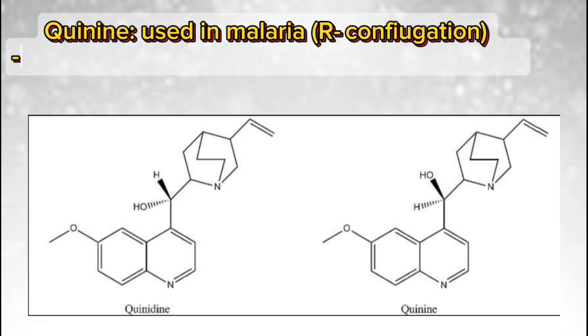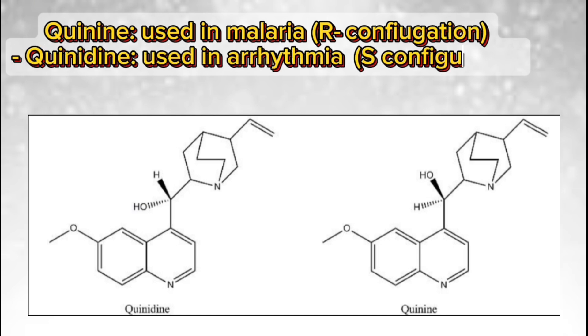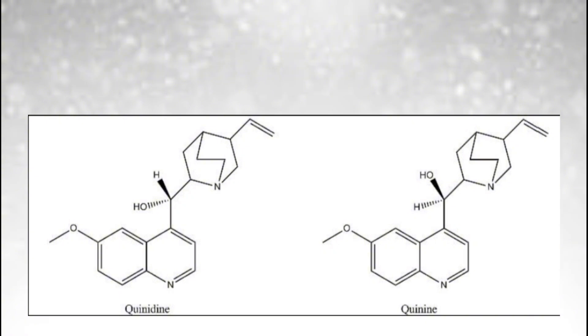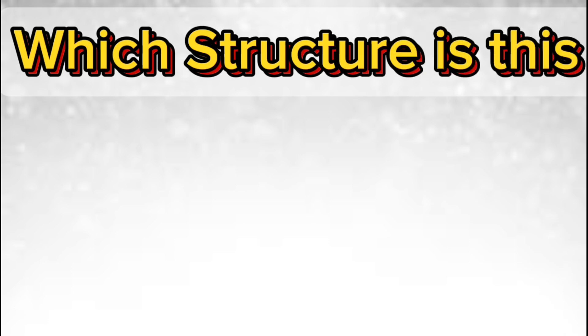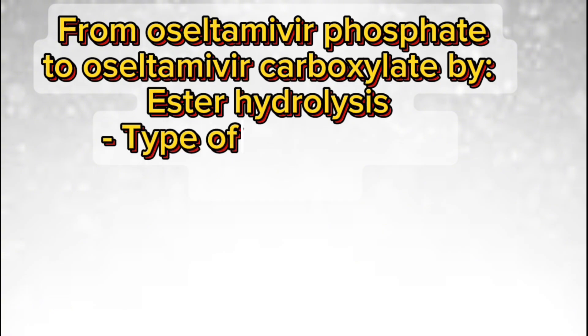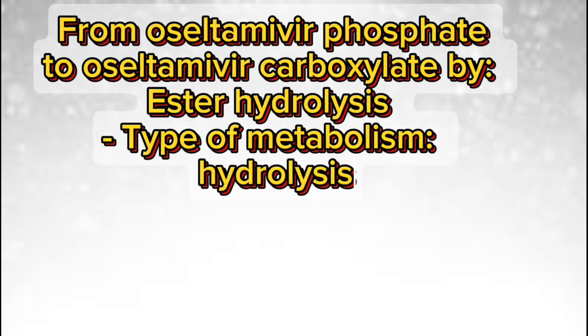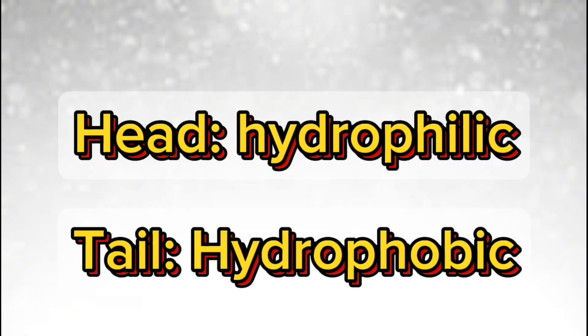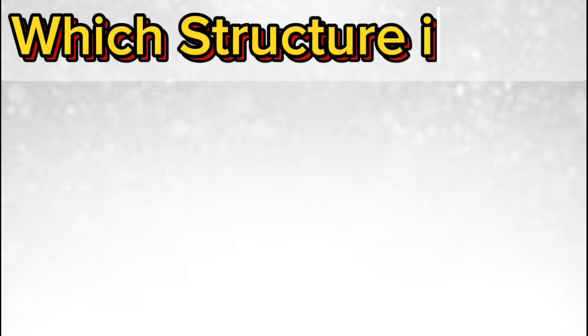Quinine is used in malaria — R-configuration. Quinidine is used in arrhythmia — S-configuration. Oseltamivir phosphate converts to oseltamivir carboxylate by ester hydrolysis — type of metabolism: hydrolysis. For phospholipids, always remember: head is hydrophilic, tail is hydrophobic.